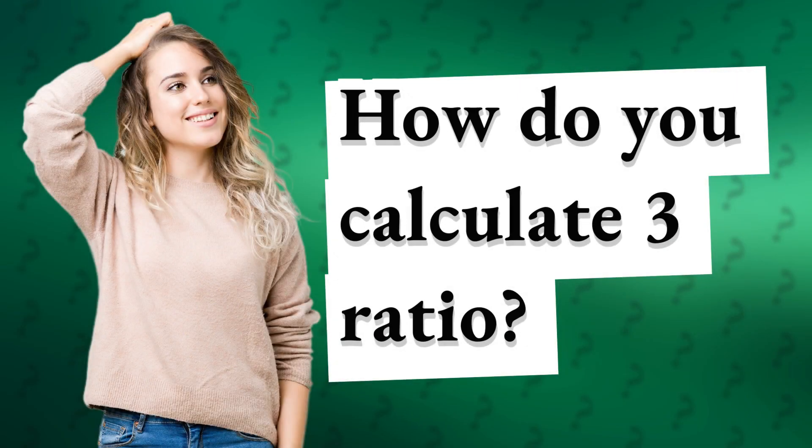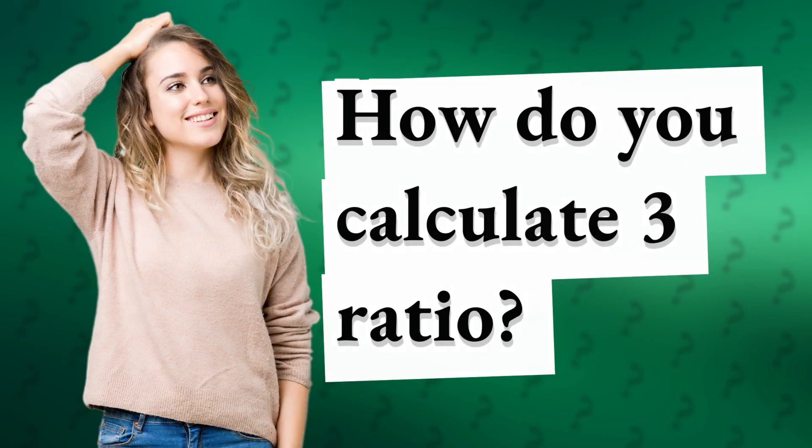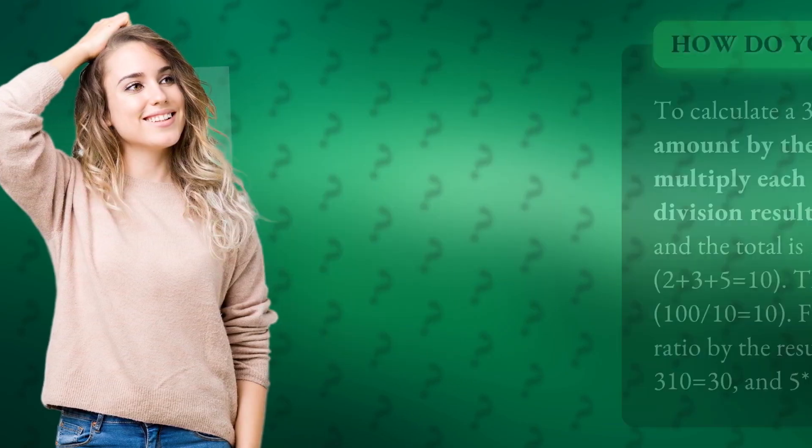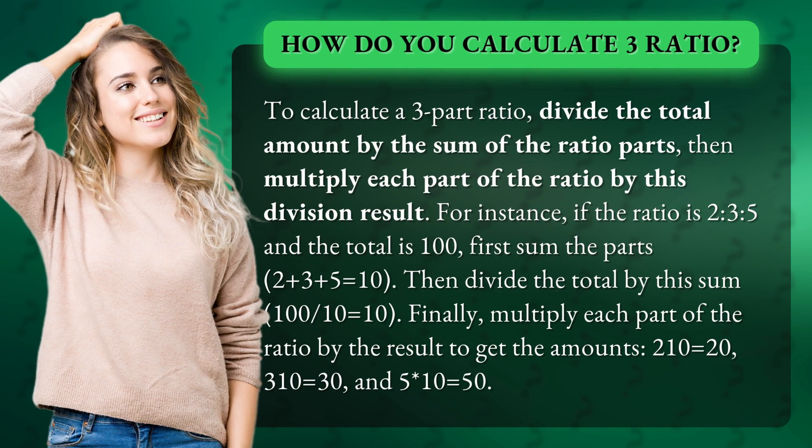How do you calculate a 3-part ratio? To calculate a 3-part ratio, divide the total amount by the sum of the ratio parts, then multiply each part of the ratio by this division result.